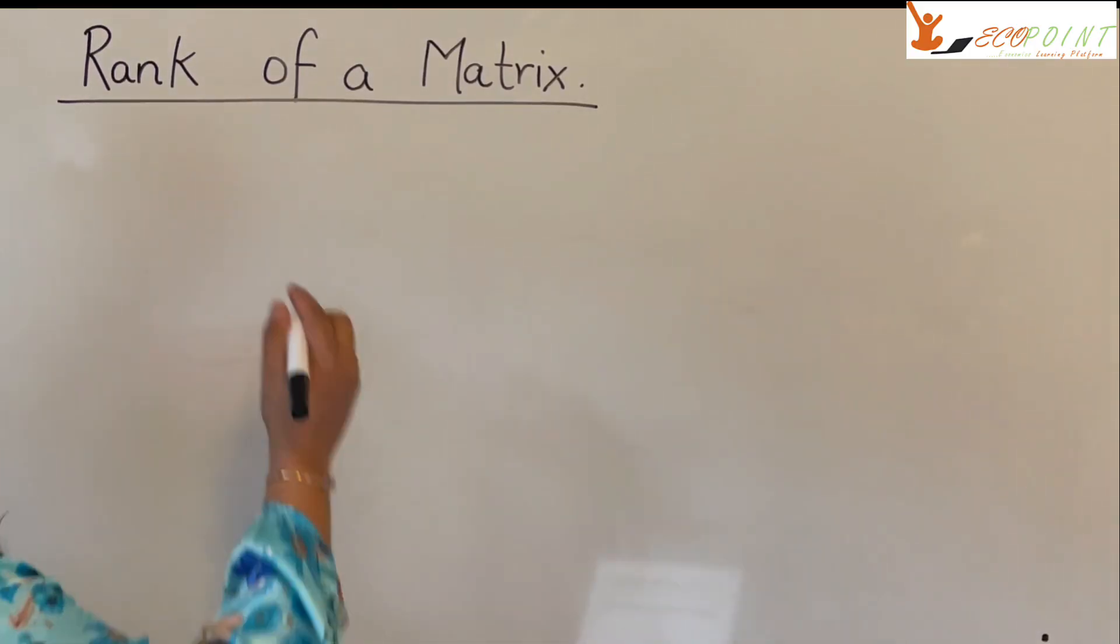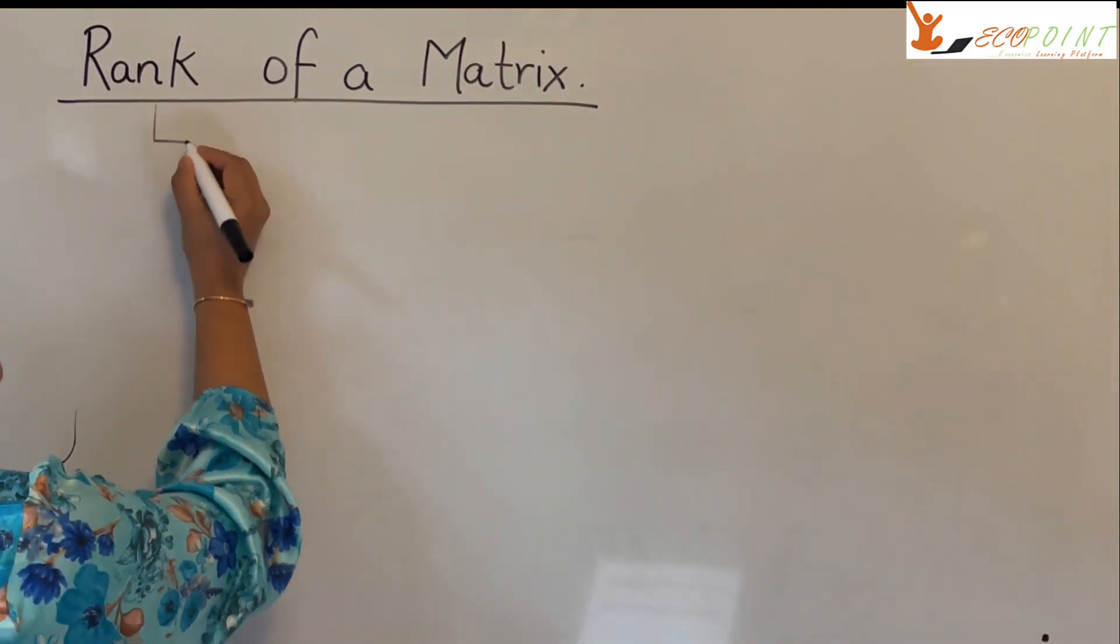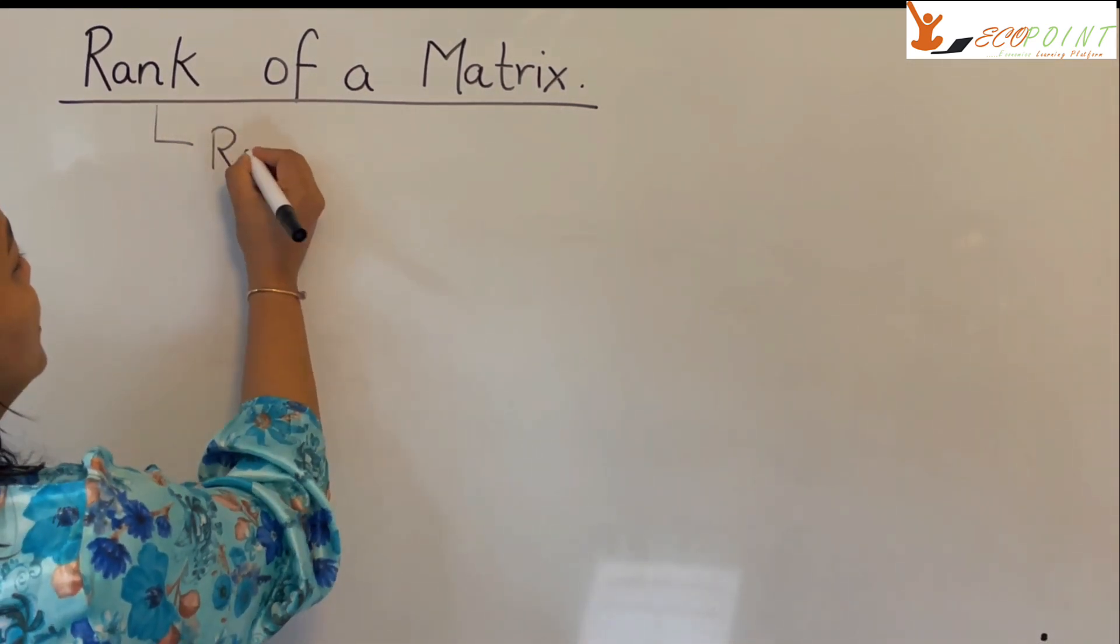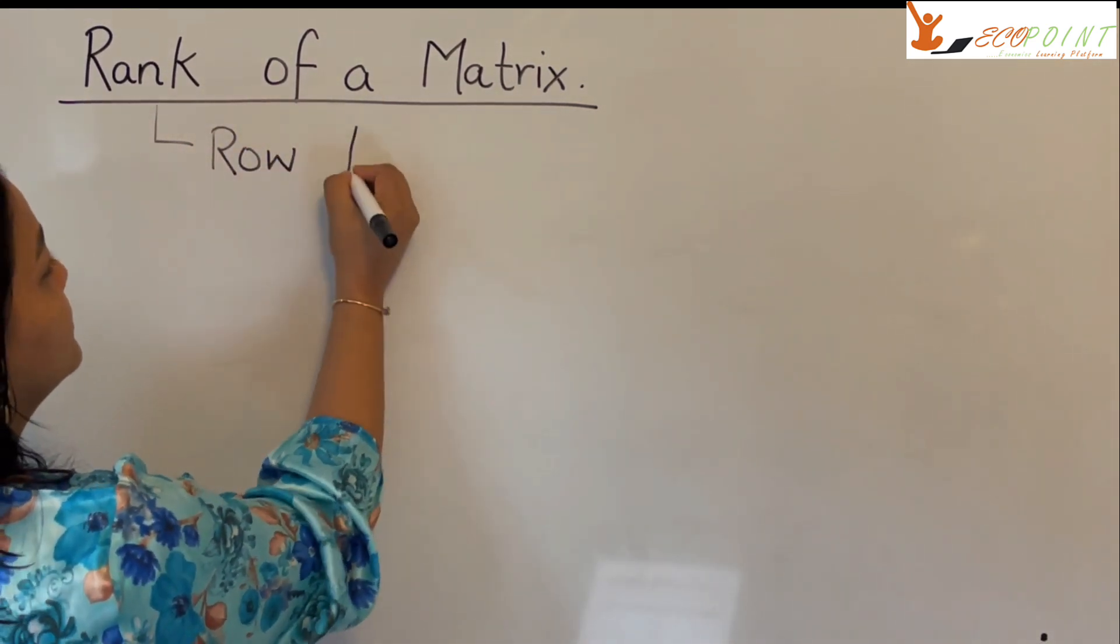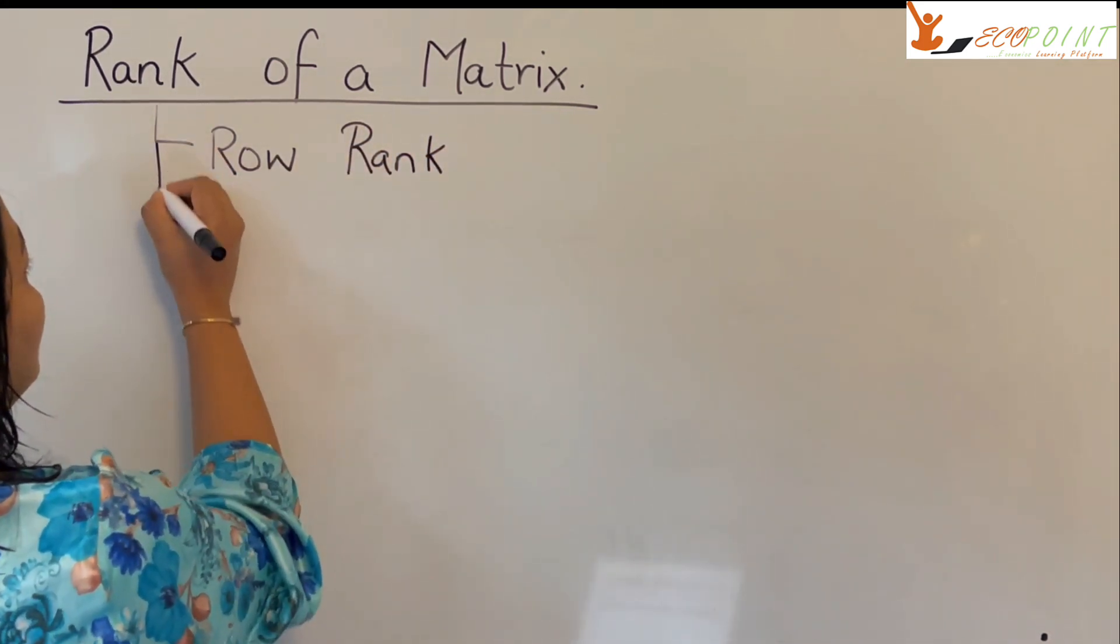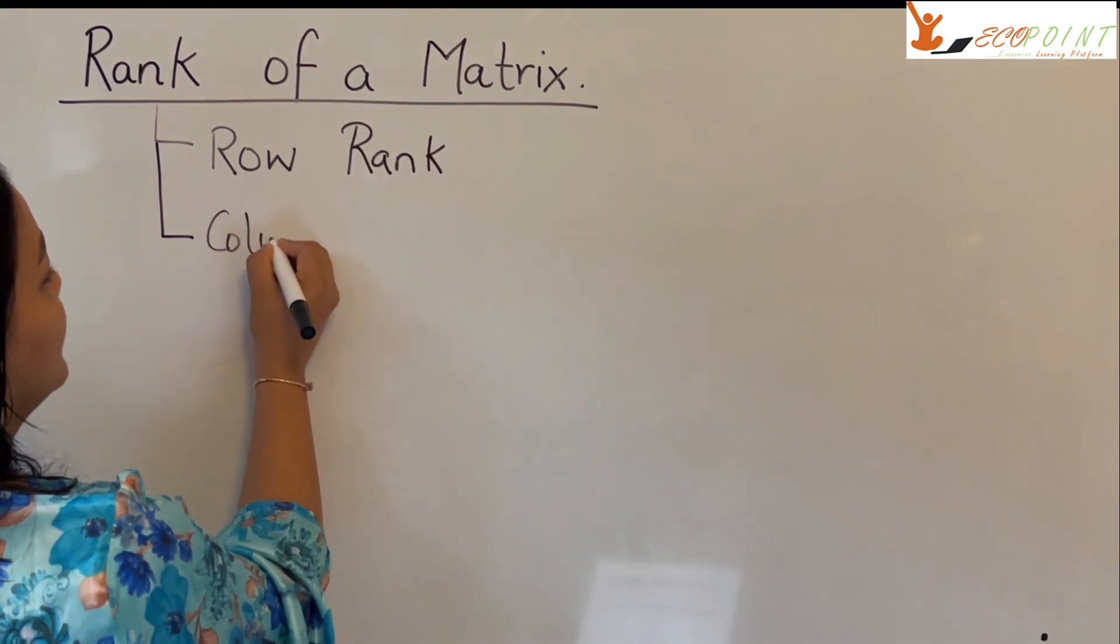So when we talk about rank for any matrix, there are two things that you should be aware of. There is something called row rank and something called column rank.